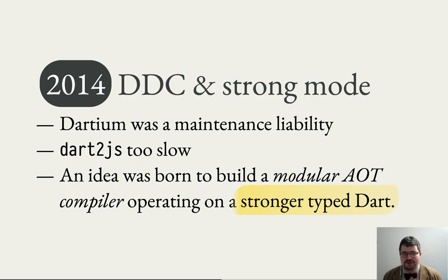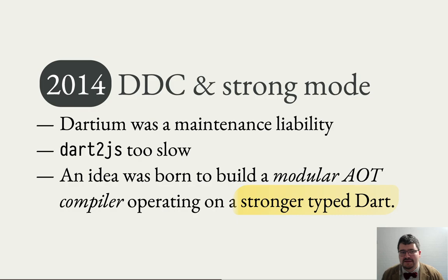So an idea was born to try to build a modular ahead-of-time compiler — not using whole-world compilation like Dart2JS was doing, making it faster, though not producing such optimized code. To compensate, it would operate on a subset of the Dart language with certain semantic changes. This subset of Dart would be much more strongly typed than Dart 1, and this stronger typing would provide a replacement for the global optimizations that Dart2JS performed in its ahead-of-time compiler.